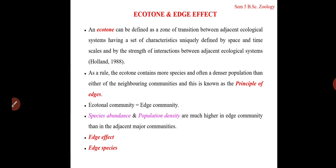Shola forests are small forested patches between grasslands — that is what we refer to as shola forests. There you can see a transition zone between grassland and forest, where you also find a very unique kind of community composition. The tension in this ecotone is because of the competition for space, food, and so on.